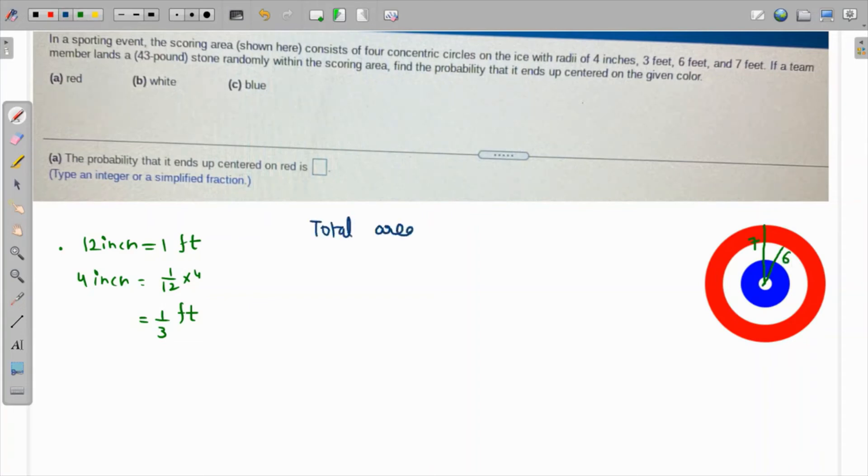Total area will be equal to π times 7 squared. The area having red will be equal to the total area, π times 7 squared, minus the area having radius 6, π times 6 squared. So the probability that it will end up on red will be π times 7 squared minus π times 6 squared over π times 7 squared.